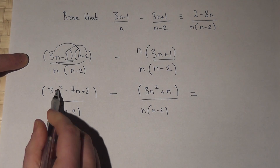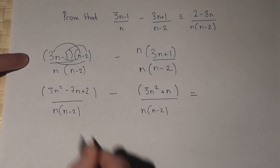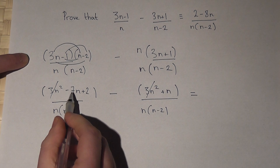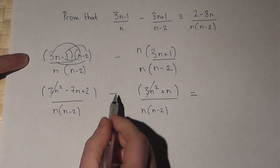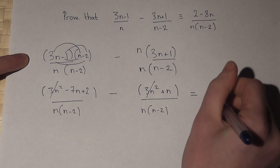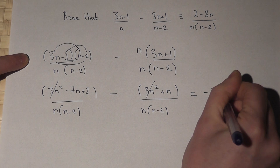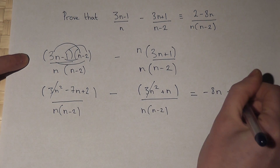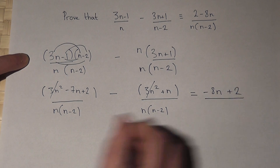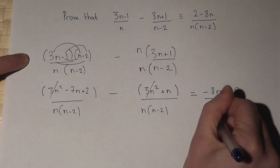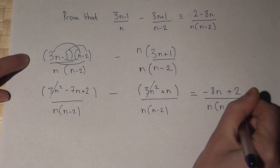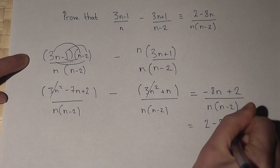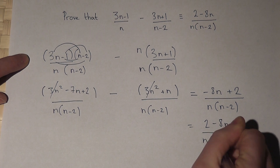3n squared take away 3n squared — they cancel off. A minus 7n take away an n is minus 8n. A 2 take away nothing, that's just 2. All over the bottom, which is n, n minus 2. Which is as required: 2 minus 8n, all over n, n minus 2.